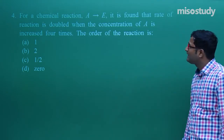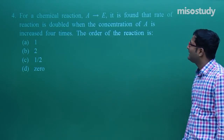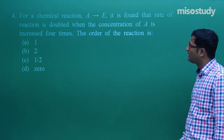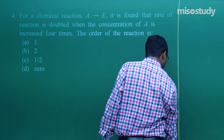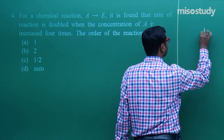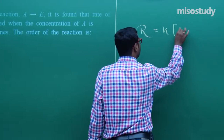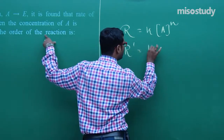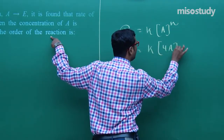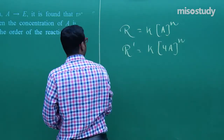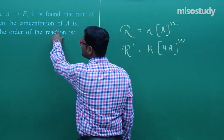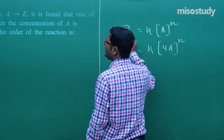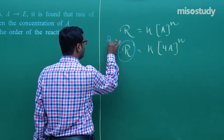Question number 4: for a chemical reaction A → products, it is found that the rate of reaction doubles when the concentration of A is increased 4 times. Write R = K[A]ᴺ. If the concentration of A increases 4 times, the new rate R' = 2R.